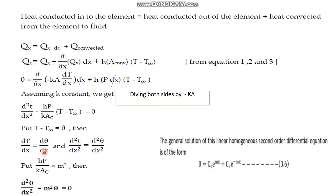Differentiating again, d²T/dx² = d²θ/dx². We also define m² = hP/(k·Ac). Substituting these into the governing equation, it reduces to the standard form: d²θ/dx² - m²θ = 0.